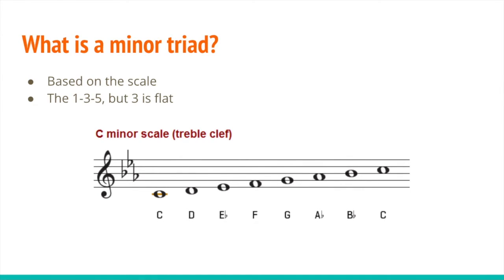So with a C scale, you would have your first note C, your flat III which would be Eb, and your V which is still G.